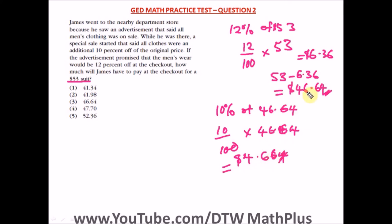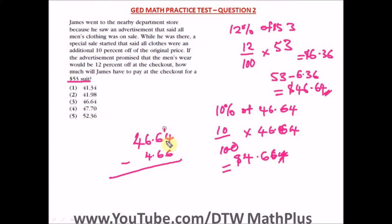From here we subtract $4.66 from $46.64 to get the final amount he's going to pay. So 46.64 minus 4.66: we borrow, 14 minus 6 gives 8; borrow again, 15 minus 6 gives 9; then 5 minus 4 gives 1, and 4 minus 0 gives 4. So the final checkout price is $41.98. This is the amount he pays after all discounts, and the correct answer is option two.